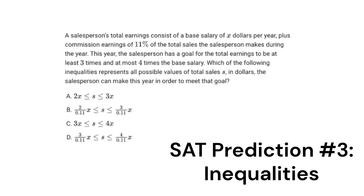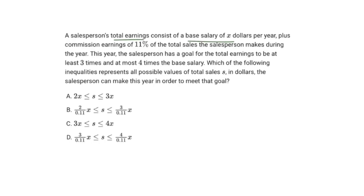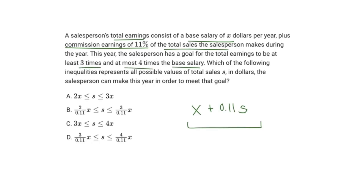This question says a salesperson's total earnings consists of a base salary, X dollars per year, plus commission earnings of 11% of the total sales the salesperson makes during the year. So the salesperson is going to make a base salary of X, and on top of that 11%, which we'll express as 0.11 of the total sales — let's just call it S. This year, the salesperson has a goal for the total earnings to be at least three times and at most four times the base salary. Which of the following inequalities represents all possible values of total sales S in dollars the salesperson can make this year in order to meet that goal?